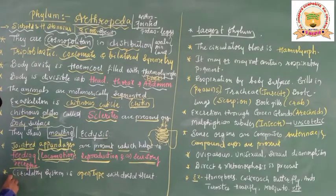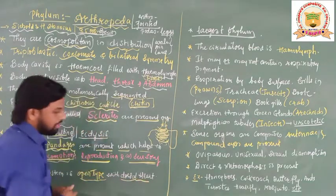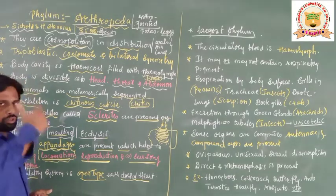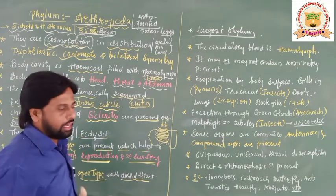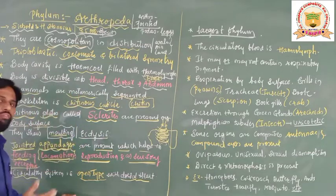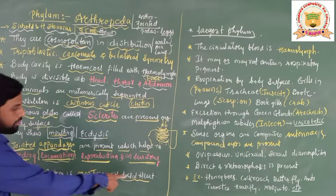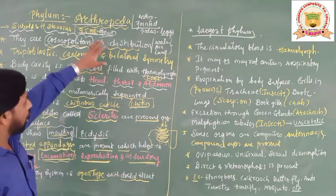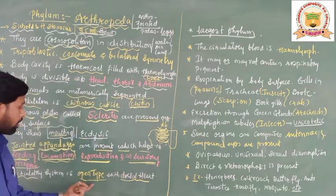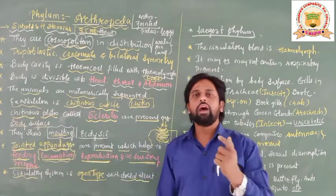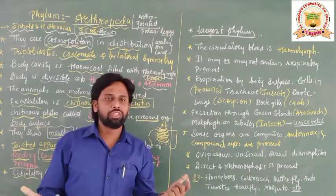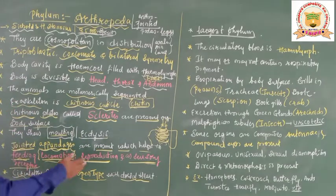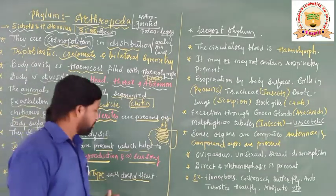The circulatory system is of the open type with a dorsal heart. The heart is present on the dorsal side, as seen in cockroaches. In open-type circulation there are no blood vessels, so the blood circulates by diffusion and the body organs are bathed in blood. We will study more about the dorsal heart and its functions in animal physiology.